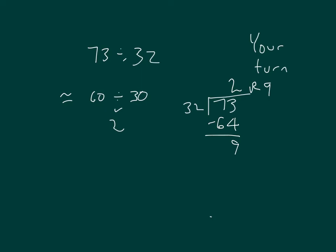With a remainder of 9. Did you run your check? 32 times 2 plus 9. 32 times 2 is 64 plus 9 is 73. And so the check does show you that your answer is correct. 73 divided by 32 is equal to 2 with the remainder of 9.